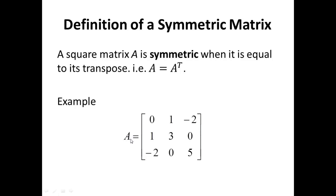The matrix A given below is symmetric, and I want you to observe the following property. Observe the elements on the main diagonal: 0, 3, 5. Now observe the elements in corresponding positions across the main diagonal: 1, 1; negative 2, negative 2; 0, 0. If elements in corresponding positions across the main diagonal are equal, then we say the matrix A is symmetric.